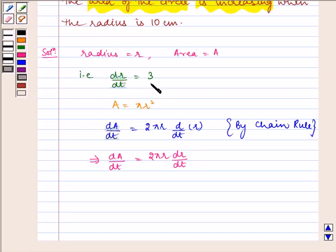dR by dt is given to us as 3, so this implies dA by dt is equal to 2 pi R multiplied by 3, which is equal to 6 pi R.